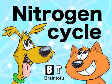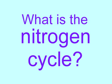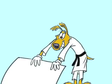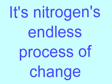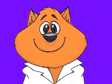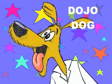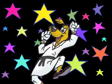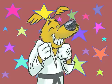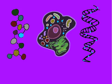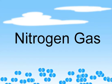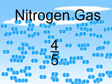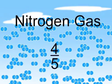Brain Tofu. What is the nitrogen cycle? It's nitrogen's endless process of change. Nitrogen is found in proteins, cells, and DNA. Without nitrogen, there would be no life. Nitrogen gas makes up four-fifths of the air around us, but it is not very usable in its gaseous form.